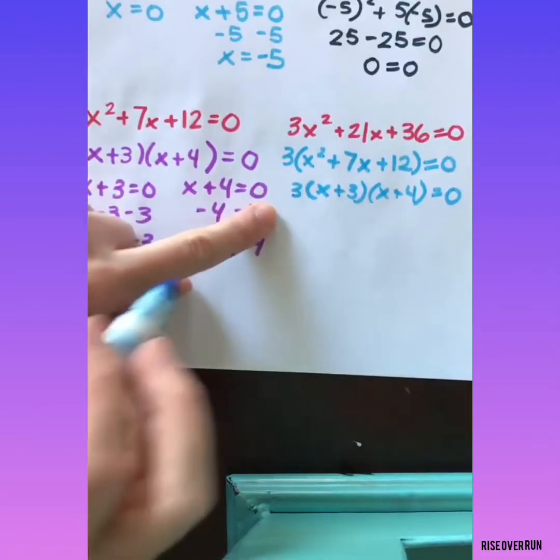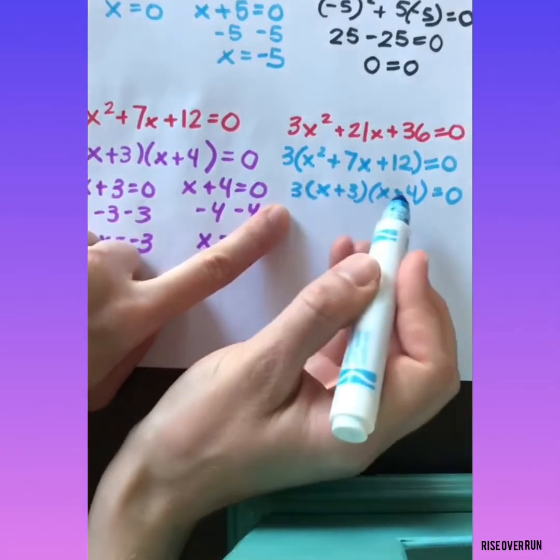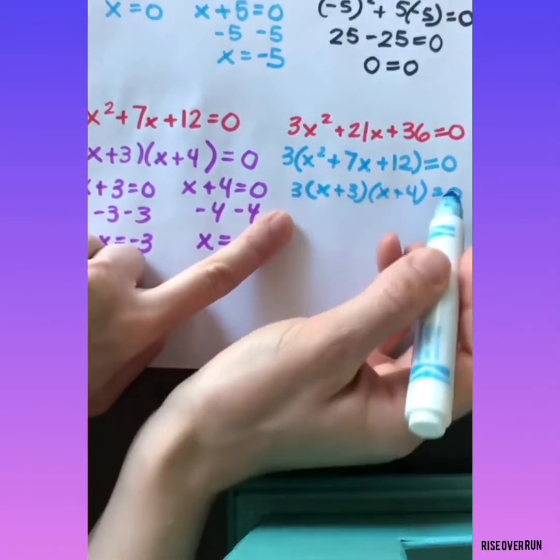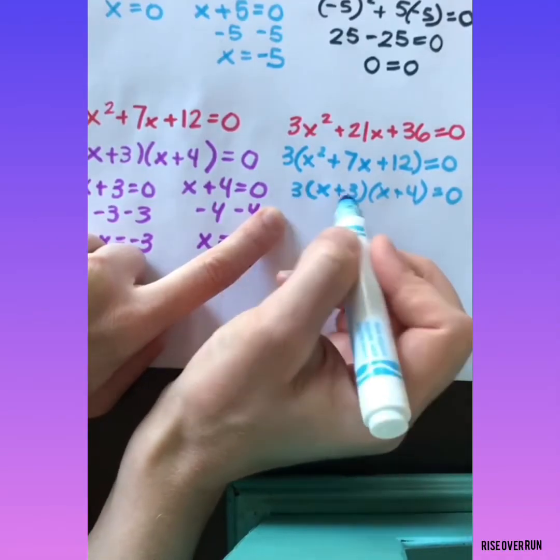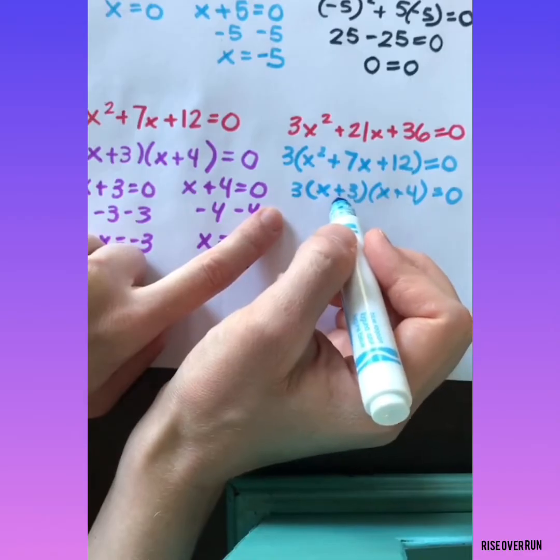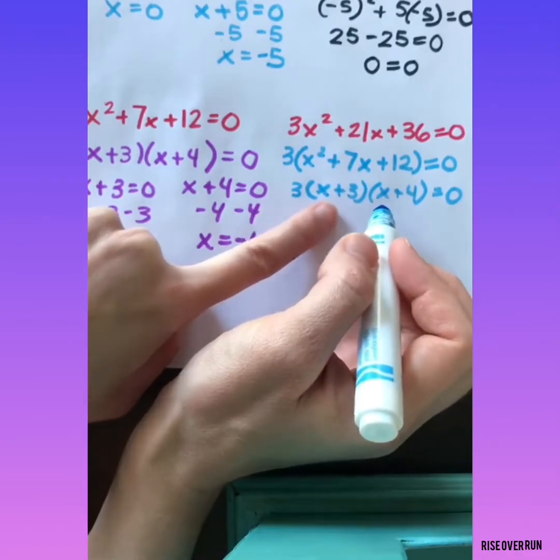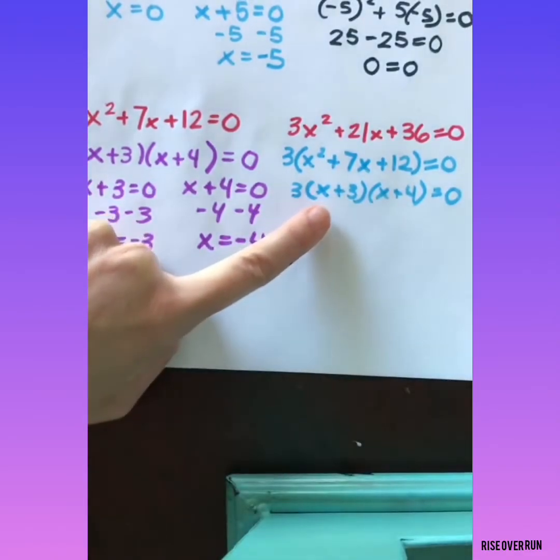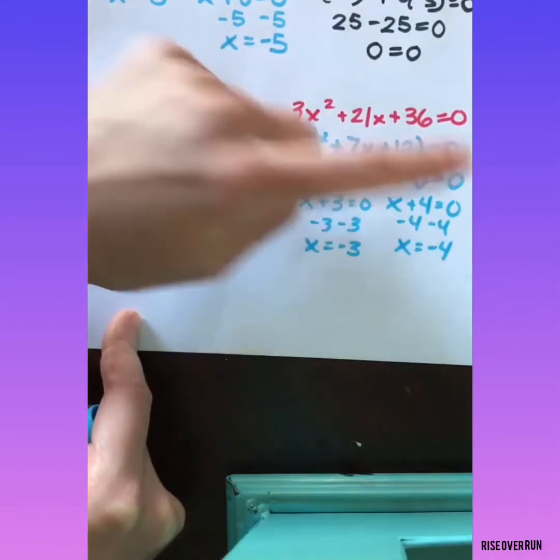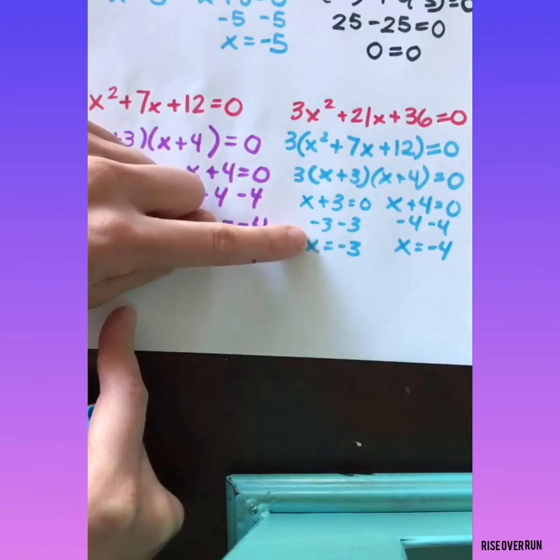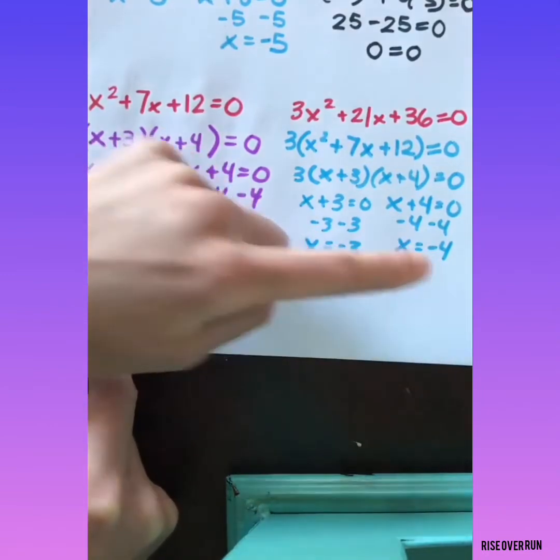Now when you get ready to solve, we have 3 factors really. But 3 doesn't equal 0. So we don't really have to do much with this 3. One of these has to equal 0. So we'll set both of these equal to 0 to find our solutions. When I set x plus 3 equals 0 and x plus 4 equal to 0, I solve both of those to get my two solutions.